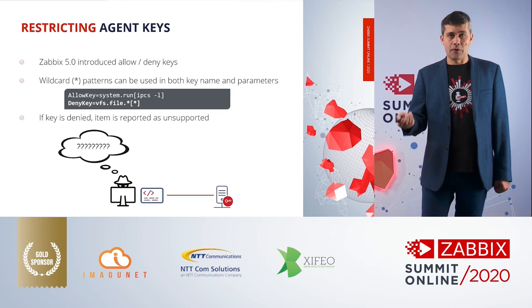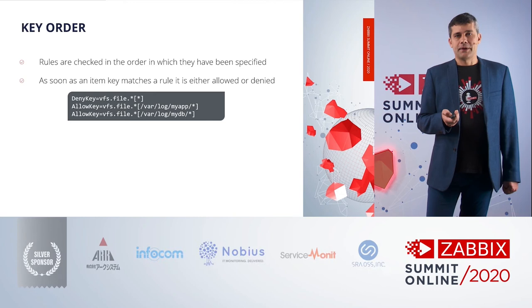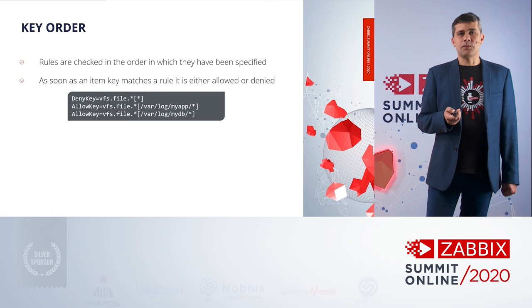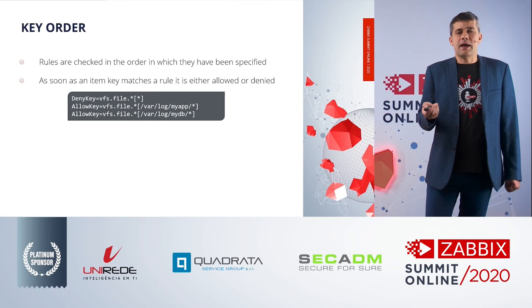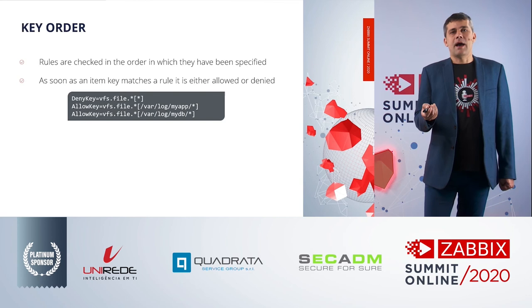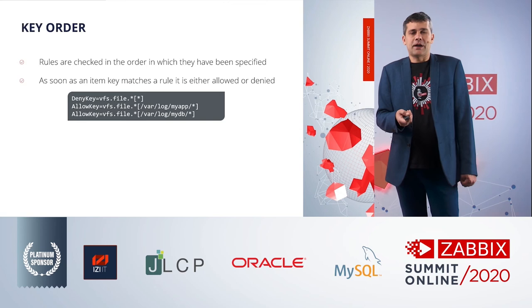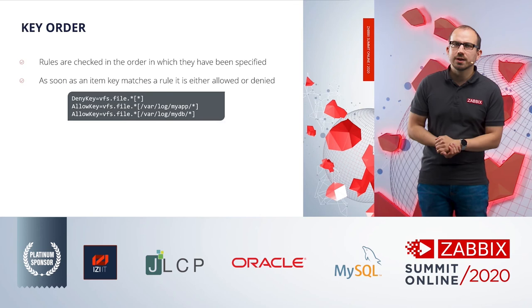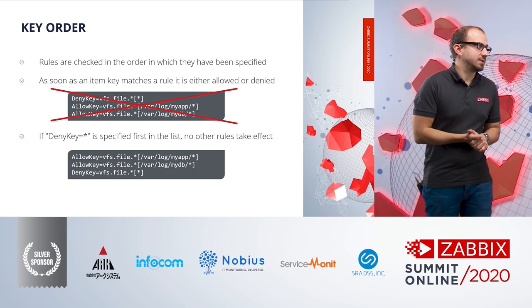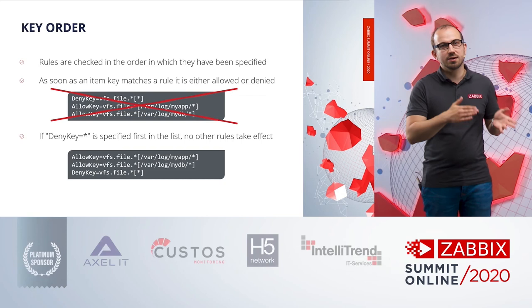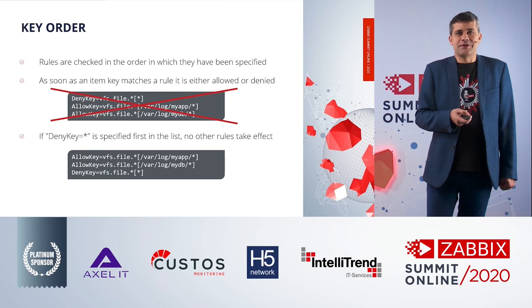Key order really matters. All AllowKey and DenyKey rules are executed in order from top to bottom, and the first match applies. For example, if you deny all keys first and then try to allow some, the allow rules will be ignored. You need to allow what you want to allow first, and then deny everything else. Otherwise all your allow keys are just ignored.